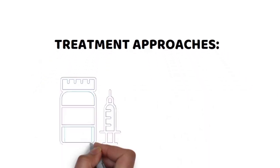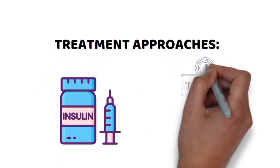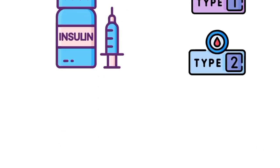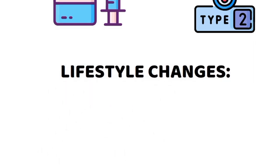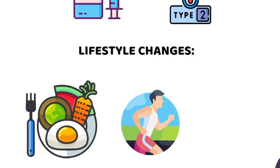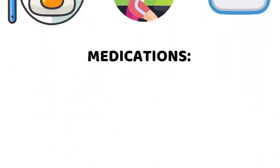Insulin therapy is essential for type 1 diabetes, and some type 2 cases also need insulin therapy. Lifestyle changes include diet, exercise, and weight management. Medications include oral agents.